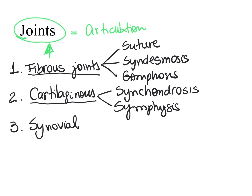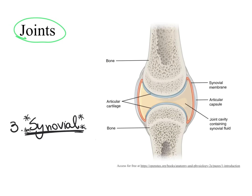The last type of joint based on what we find between the bones is the synovial joint — the most common joint in our body. What is very characteristic of a synovial joint is the presence of a cavity between the bones, called the articular cavity. That cavity is filled with a fluid called synovial fluid. The joint between the bones has a capsule called the articular capsule.